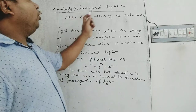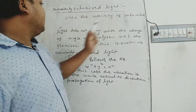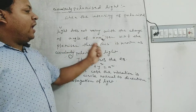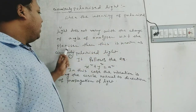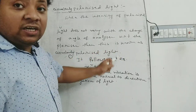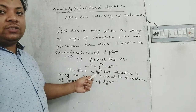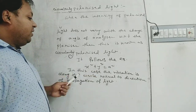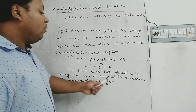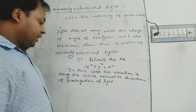Next, circularly polarized light. When the intensity of polarized light does not vary with the change of angle of analyzer with respect to the polarizer, then this is known as circularly polarized light. It follows the equation x² + y² = r². In this case, the vibration is along a circle in a plane normal to the propagation of light.